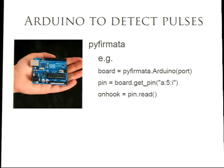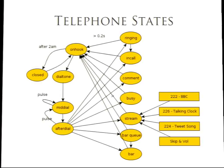PyFirmata is a very cool tool. I thought telephones would be simpler — you pick up, you dial, you speak. It took a little more work. They unhook, then you pick up, then you need a dial tone. At the moment you get my voice saying 'Welcome to Alexander Bar.' Then as you're dialing there are pulses, and I keep track of whether it's still part of the same number or whether you've finished dialing. It loops in a mid-dial section until there hasn't been a pulse for a while. If you dial 222 for example, that's the BBC World Service — it streams that off the internet.